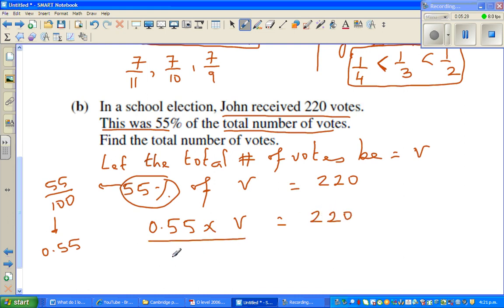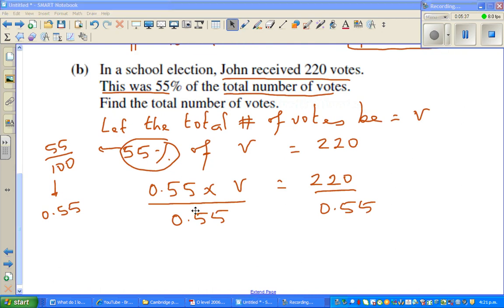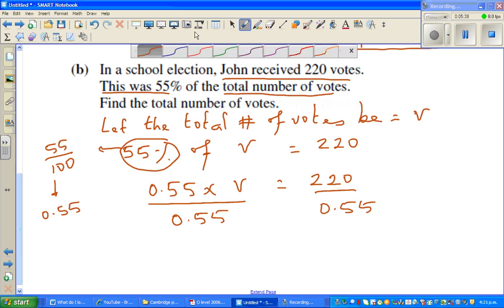So this is, I'm going to divide this side by 0.55. So it also divides this side by 0.55. So what happens now? So this and this gets cancelled. Let me change colour. So this and this gets cancelled. So, you got, v is equal to 220 divided by 0.55.